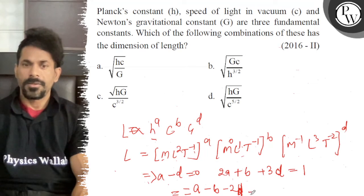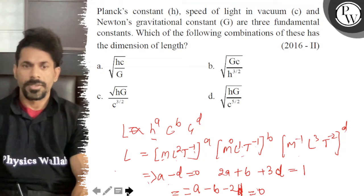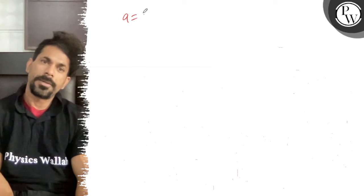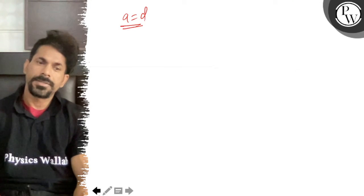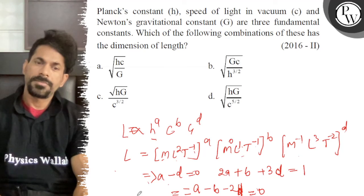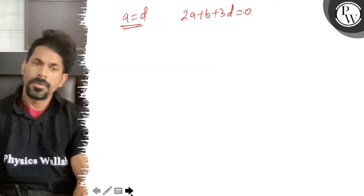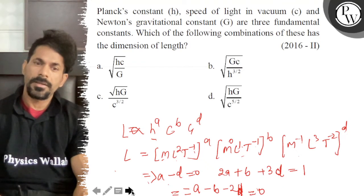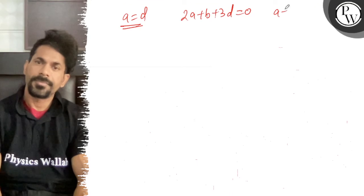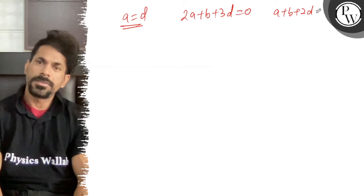And that is also equal to 0. So a minus d is equal to 0.